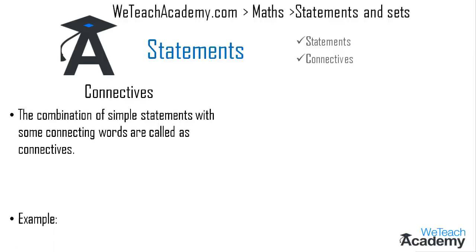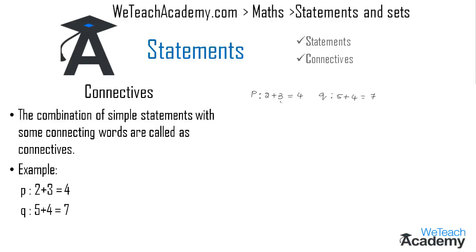For example, consider two statements: '2 plus 3 is equal to 4' and '5 plus 4 is equal to 7'. Both are false statements, as 2 plus 3 is 5 and 5 plus 4 is 9. We can form a number of compound statements composed of these two statements.